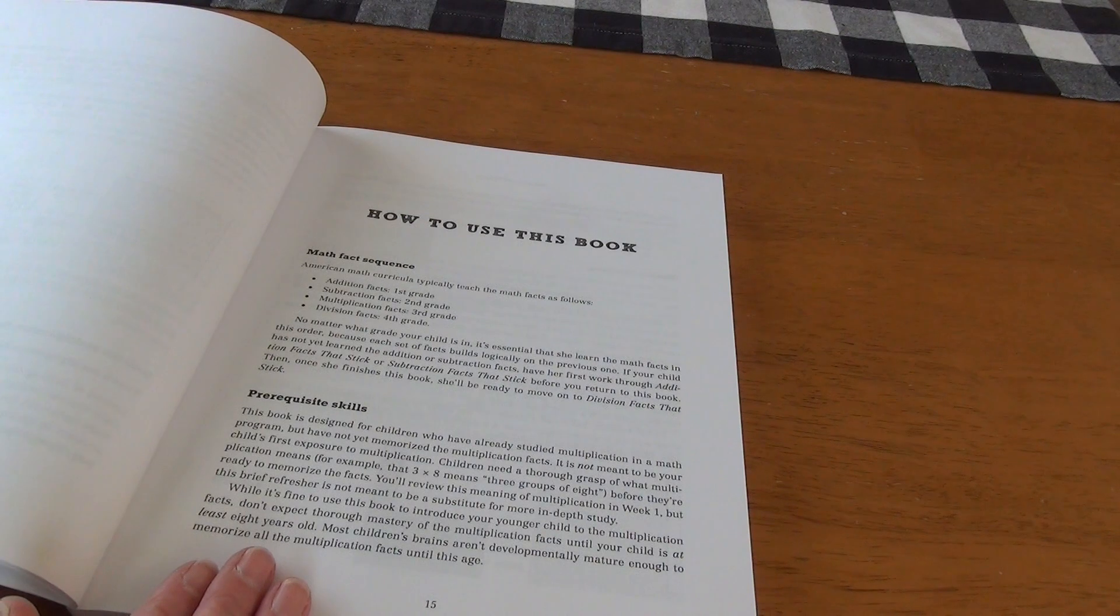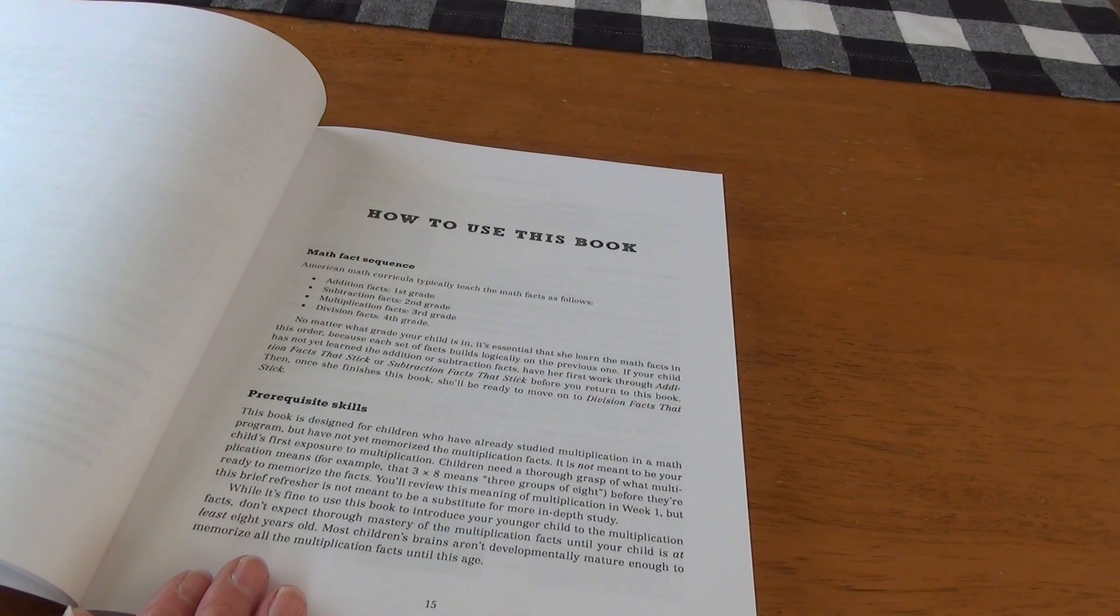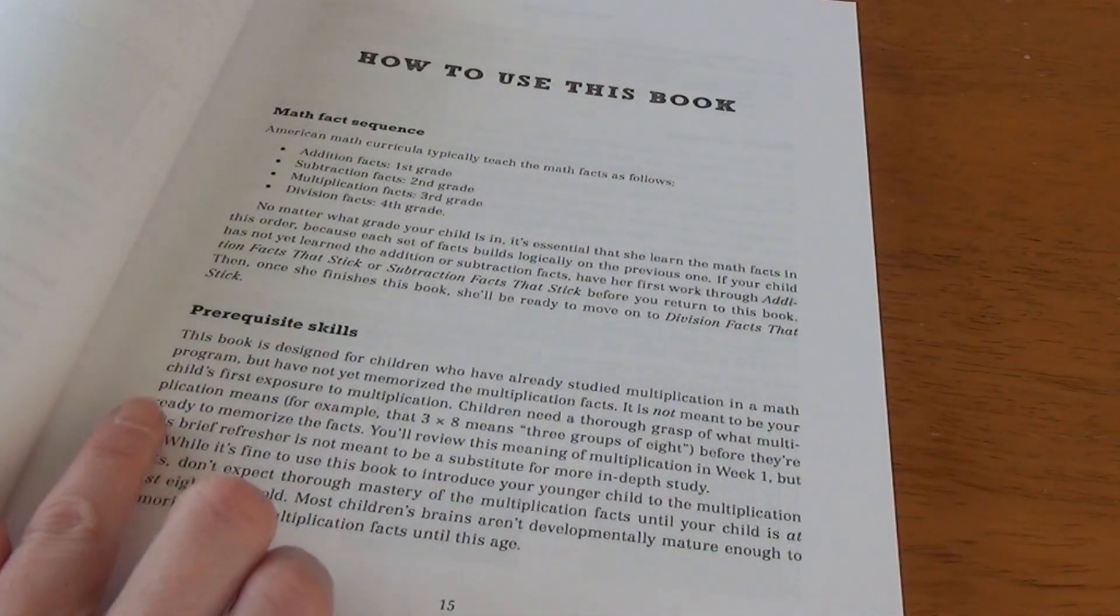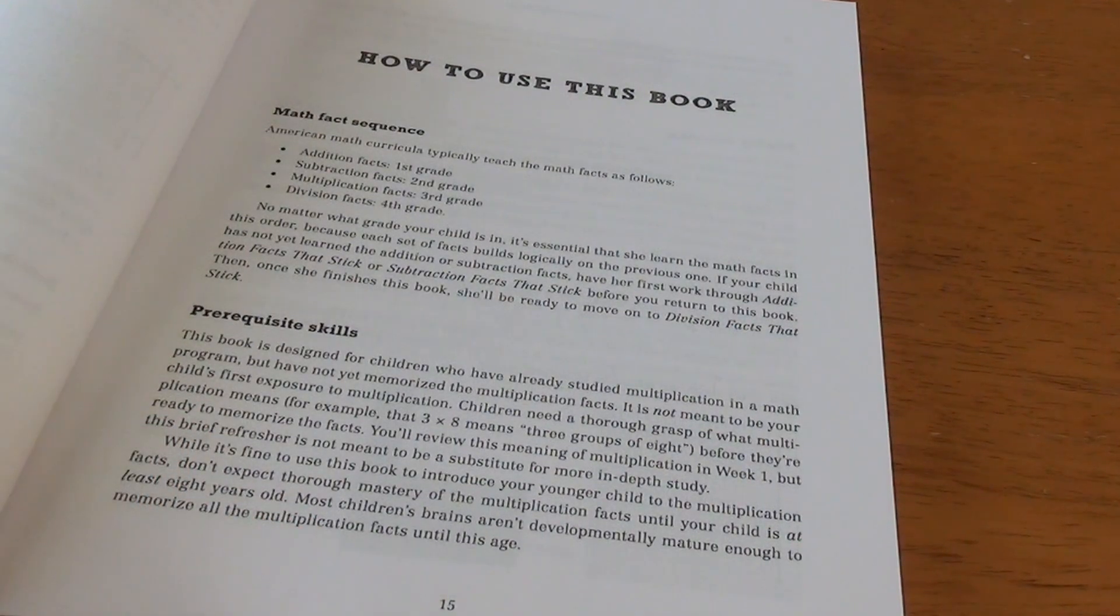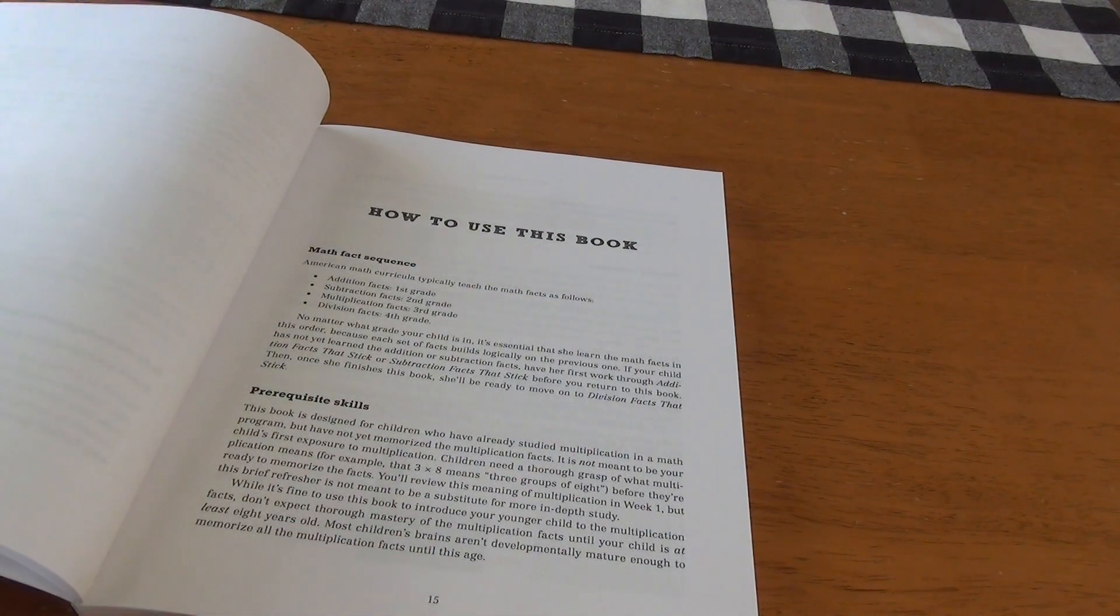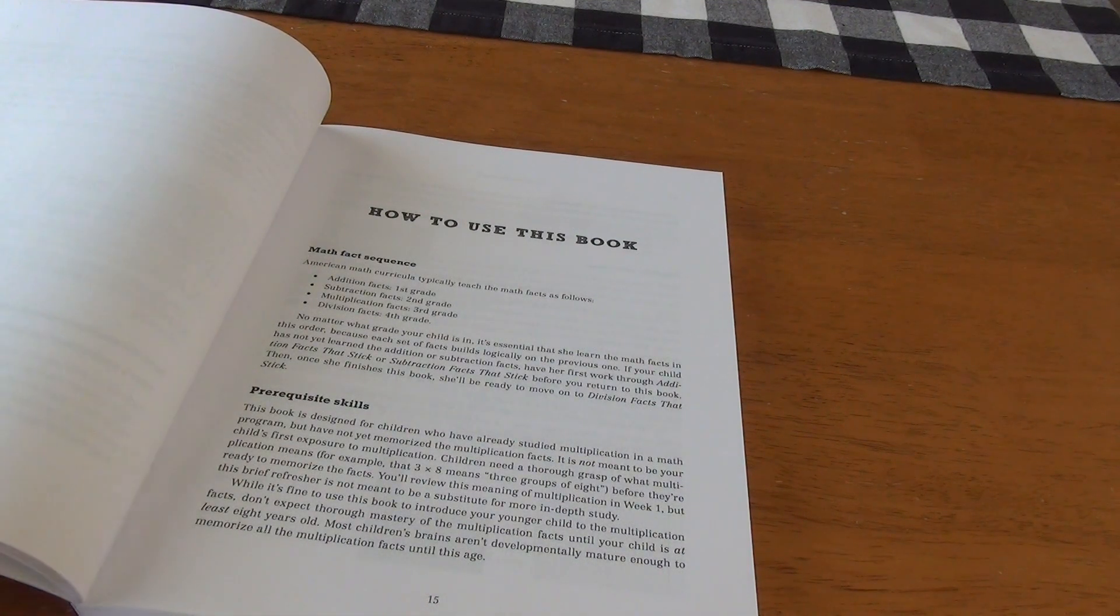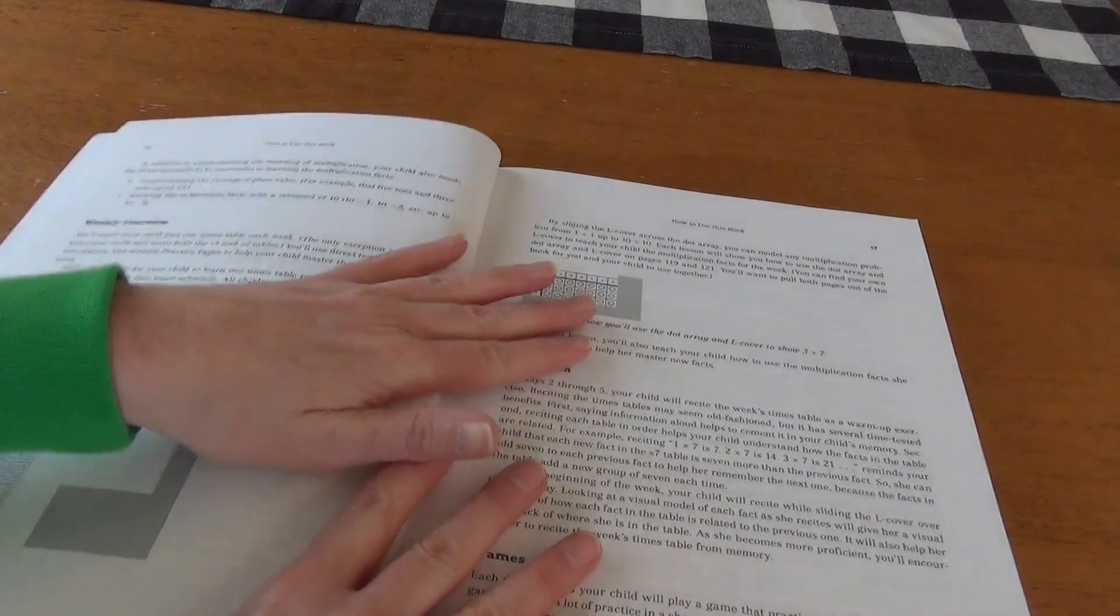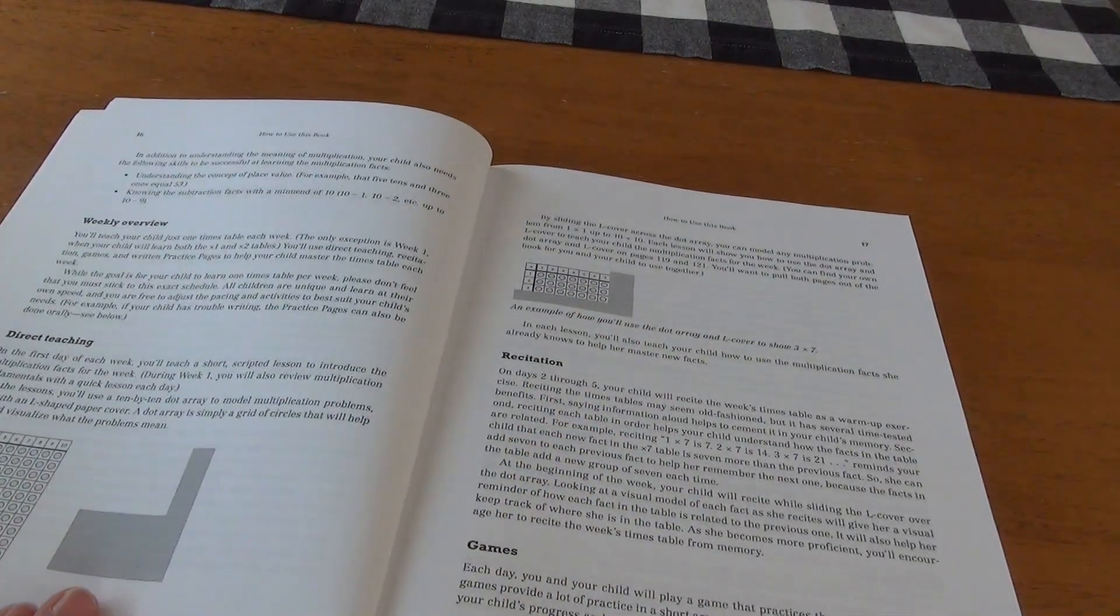It does say that this book is designed for children who have already studied multiplication in a math program, but have not yet memorized the multiplication facts. It is not meant to be your child's first exposure to multiplication. Children need a thorough grasp of what multiplication means before they're ready to memorize the facts. So again, use your own discretion on that. But yes, she has had some introduction to multiplication because we were doing that in 1B already.